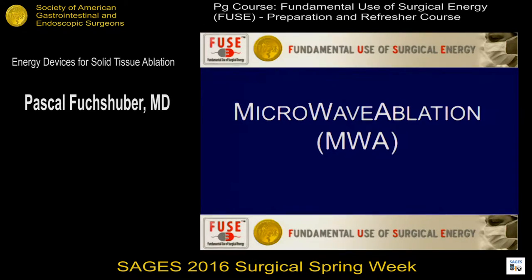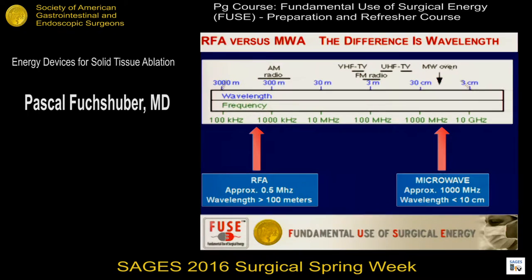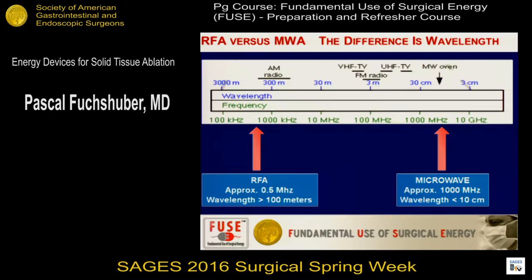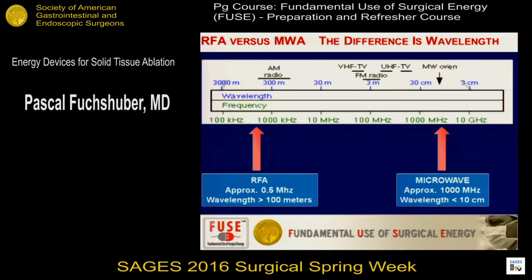Now let me switch to microwave ablation. The main difference between radiofrequency and microwave ablation is the frequency at which these systems work. Microwave is also alternating energy, but at 10,000 megahertz — essentially 1 gigahertz, or 1,000,000,000 hertz — versus 500,000 hertz for usual alternating current. So we are in the microwave oven range of energy. A key concept is that the wavelength is very different: in radiofrequency energy, the wavelength is greater than 100 meters — hundreds of times longer than the electrode used — whereas in microwave, the wave is about the size of the tip of the electrode.